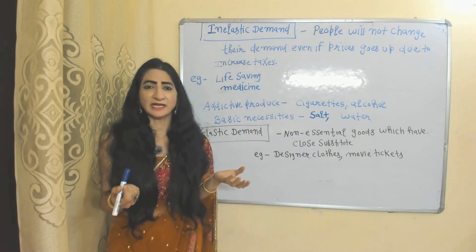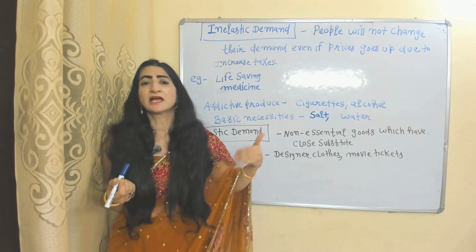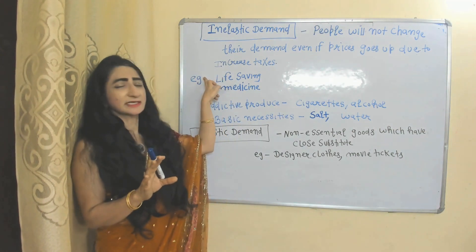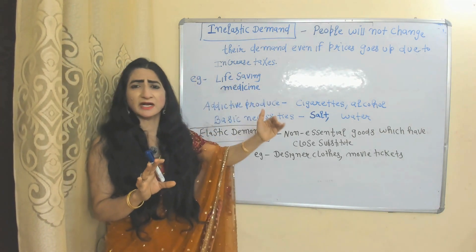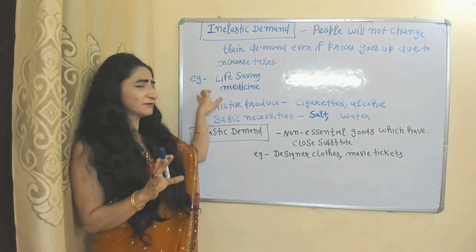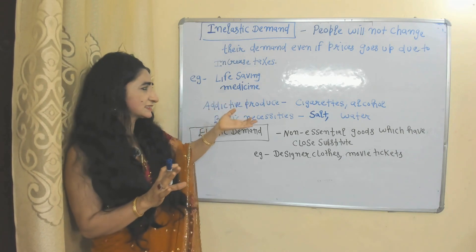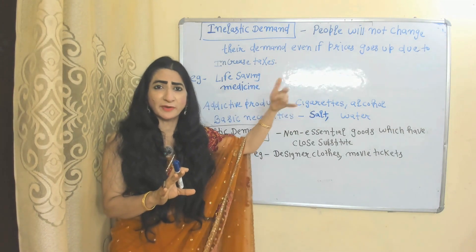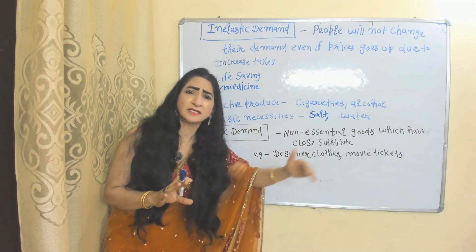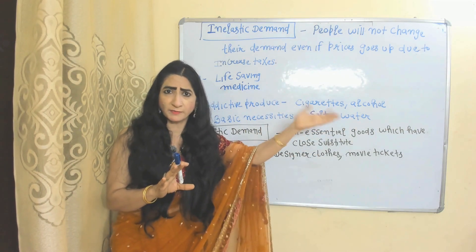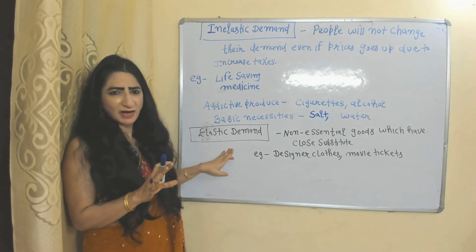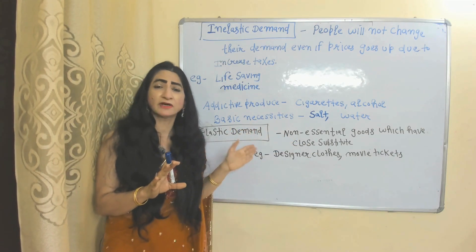But why should the government impose higher taxes on goods which demand is inelastic and lower taxes on goods which demand is elastic? Inelastic demand means people will not change their demand even if prices go up due to an increase in taxes. For example, people will not reduce demand for life-saving medicine, cigarettes, alcohol, salt, or water even if their price goes up. If people continue buying these products even as prices rise, then obviously the tax revenue of the government will increase.